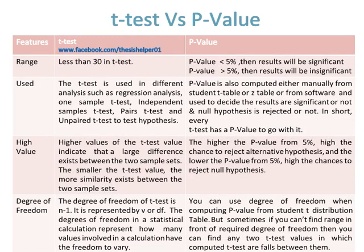A p-value greater than five percent means results will be insignificant. The t-test is used in different analyses such as regression analysis, one-sample t-test, independent samples t-test, paired t-test, and unpaired t-test. The p-value is computed either manually from a Student t-table or z-table, or from software, and is used to decide whether results are significant and whether the null hypothesis is rejected.